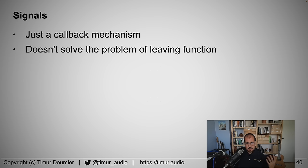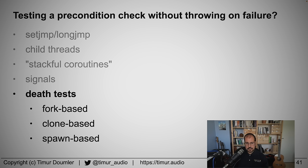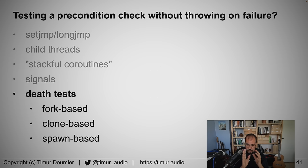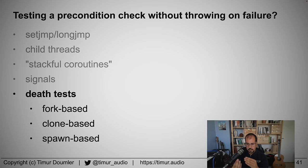That leaves exactly one more technique: if we can't return, can't throw, can't longjmp, can't do any of these other things — the only thing we can do is terminate the process. So we launch the test in another process and then terminate that process. In our unit testing framework, we verify that the process has in fact been terminated. These are death tests, and they come in three flavors: fork-based, clone-based, and spawn-based.